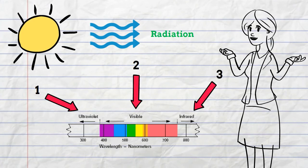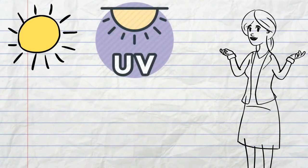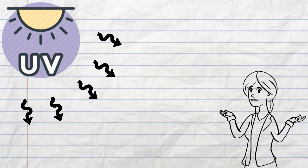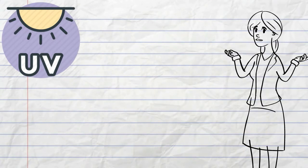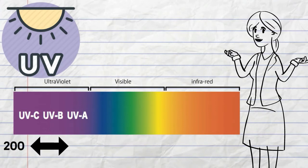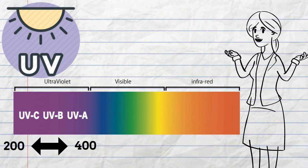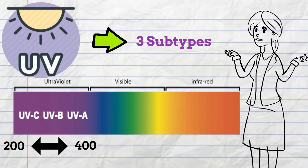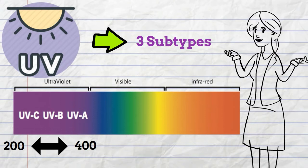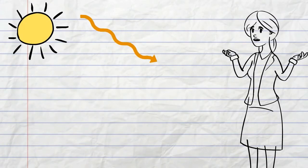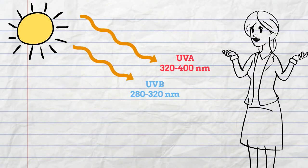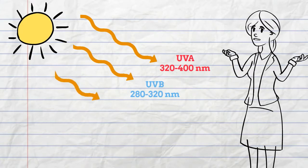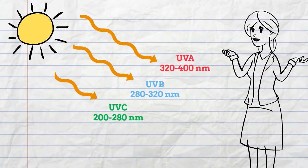Specifically, exposure to UV radiation is what causes skin cancer by damaging the DNA in our cells. UV radiation includes the wavelengths between 200 to 400 nanometers and can be further broken down into three subtypes: UVA, which ranges from 320 to 400 nanometers; UVB, which ranges from 280 to 320 nanometers; and UVC, which ranges from 200 to 280 nanometers.